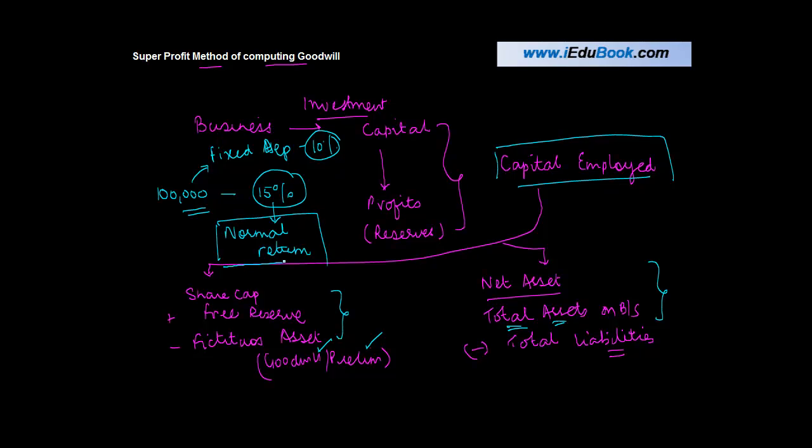But what differentiates a successful business from a non-successful business is that in a successful business, normally this rate is more than 15%. So let's say it is 20%. When the actual return in a business is higher than the normal return which is accepted as a norm in the industry, we say that the business has the capability of making super profit.